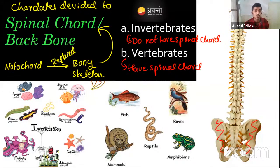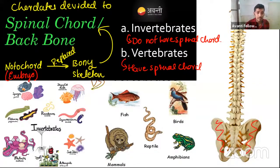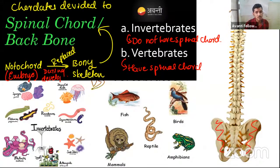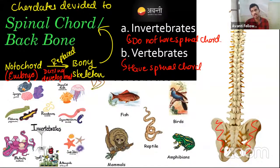The notochord will be present in the embryo only. Later stages — during development — it will be replaced by a bony skeleton. In the embryo stage, the notochord is present; during development it turns into a bony skeleton. That's what we saw in the last picture — a fish embryo developmental photo.